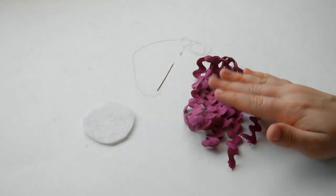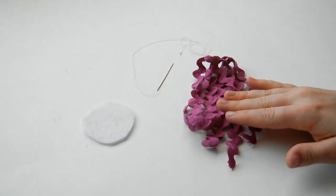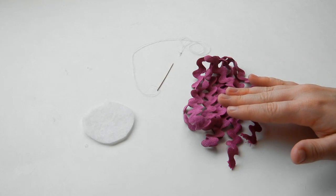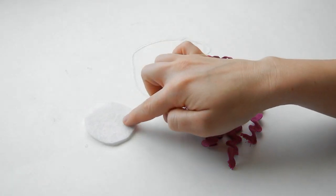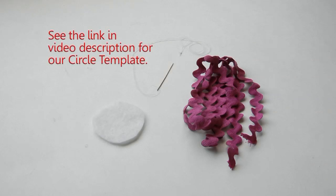Start out with your rickrack, felt circle, and your needle and thread. My rickrack is three-fourths an inch and the color magenta. And you can find a huge assortment of colors here at The Ribbon Retreat. And my felt circle is two and a quarter inches. You can see our video description for the link to our circle template. And these flowers are beautiful in any size.